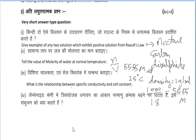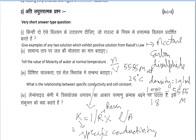Next question: what is the relationship between specific conductivity and cell constant? The relation is given by κ = 1/R × l/a. This is the relation between them. κ is specific conductivity, R is resistance, l will be length, a will be area of cross section.